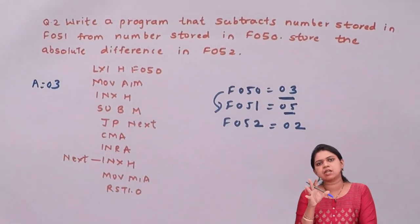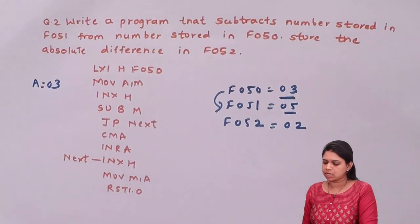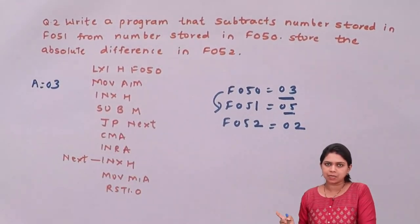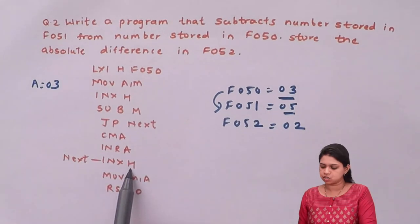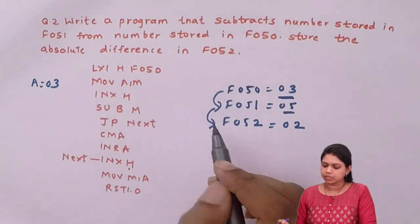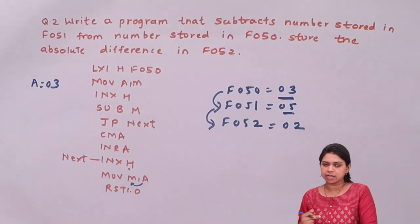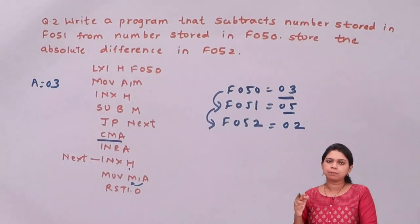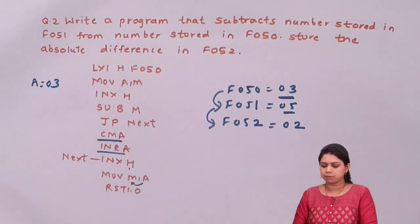JP next — jump on plus. I check the sign flag. If the sign flag is 0, my answer is positive and I jump directly to INX H to go to F052 and store the answer. But if the sign flag is 1, meaning the answer is negative, I perform the one's complement of the number, add 1, which converts it to a positive answer, and then store that answer in F052.